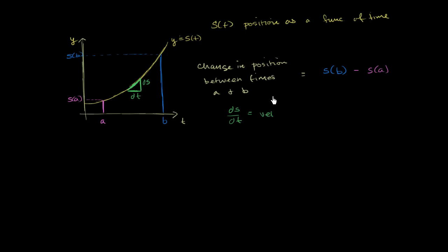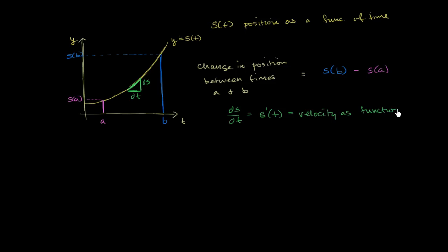Let me write this in different notations. This is going to be a function of time, so we could write this as s prime of t — two different ways of writing the derivative of s with respect to t. This makes it clearer that it is itself a function of time, and we know this is the exact same thing as velocity as a function of time.